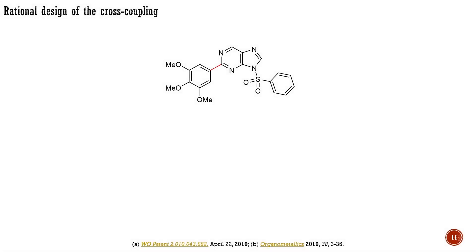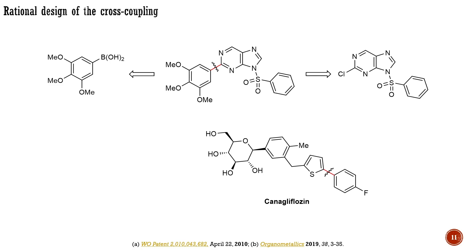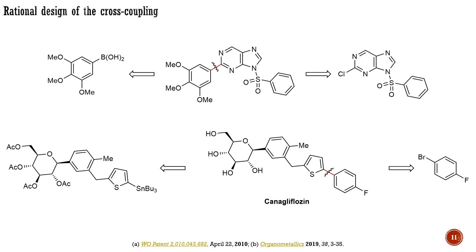What you learned in this lecture should allow you to design your synthesis involving cross-couplings more rationally. If you are tasked to prepare a purine derivative, then you can start your retrosynthesis from the disconnection of the bond in red. For the overall efficiency of the process, you can consider the Suzuki coupling based on electron-rich trimethoxyphenyl boronic acid and an electron-deficient chlorinated purine derivative. If you want to prepare the commercial drug canagliflozin, used to treat type 2 diabetes, then you can start your retrosynthesis by disconnecting the bond between thiophene and fluorobenzene, applying the Stille coupling based on electron-deficient 4-fluorobromobenzene and an electron-rich derivative of 2-tributylstannyl-thiophene.